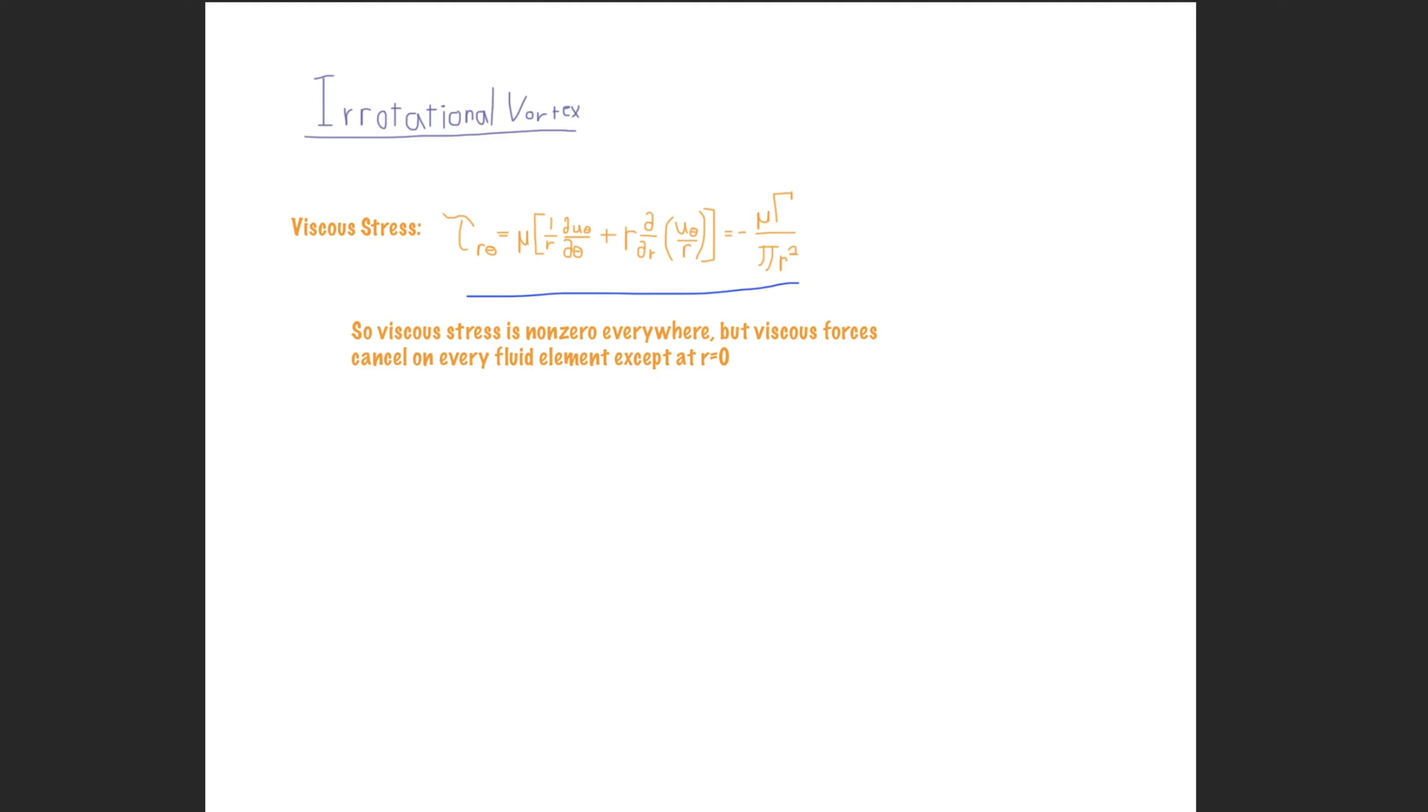So our Cauchy equation of motion again simplifies down to Euler's equation. So now if you'll recall, in an irrotational vortex, the angular velocity is equivalent to the circulation divided by 2 pi r, right?